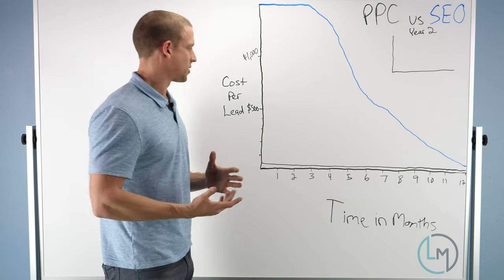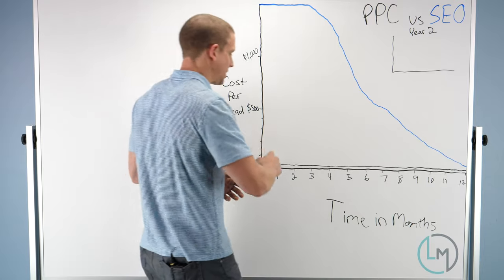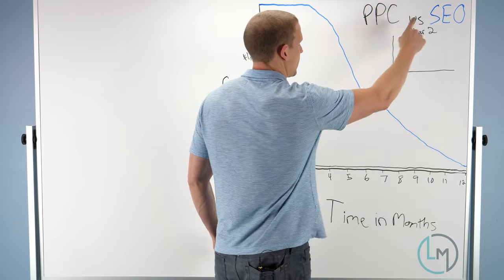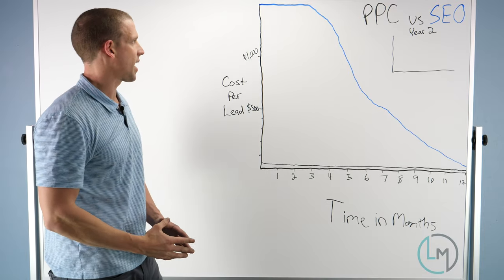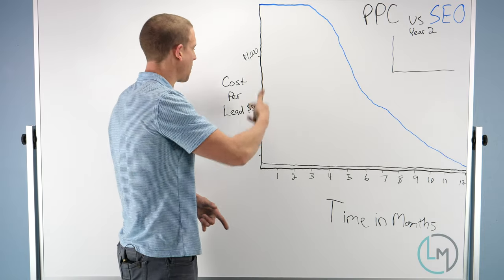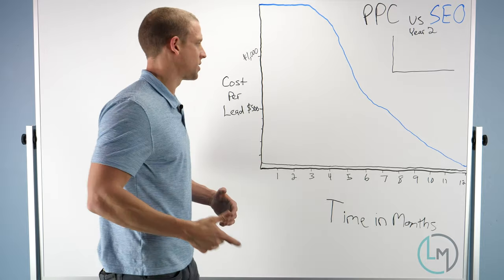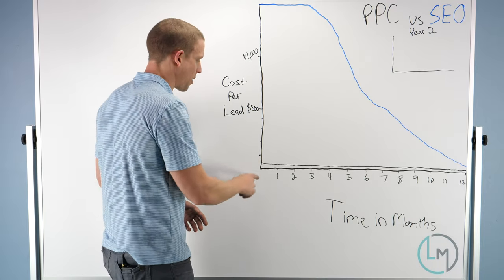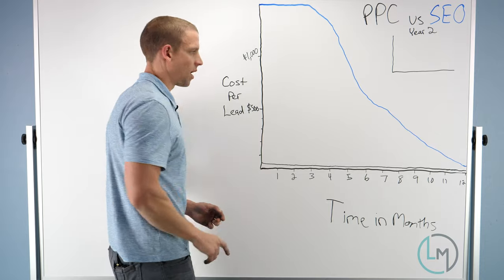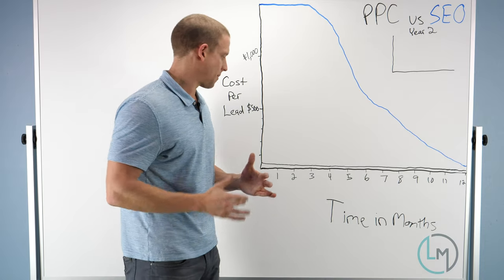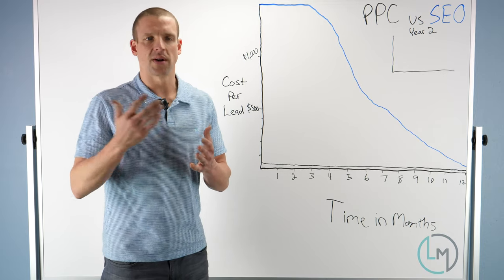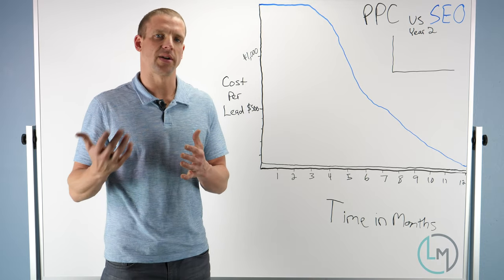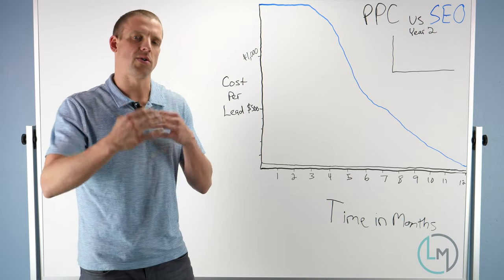These lines here: this black line is pay-per-click, the blue line is SEO, search engine optimization. This is how much you're paying per lead. You're going to notice right away pay-per-click starts out at a pretty low cost per lead. I'm basing these—these aren't going to be exact numbers, they're just here to kind of make a point of how you can compare them and their relative cost per leads.